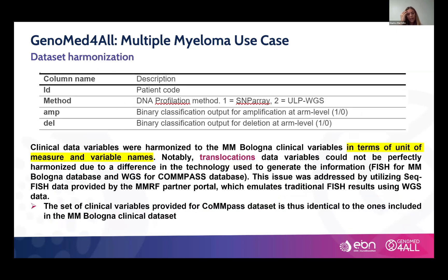Two steps were carried out by our group in Bologna for this dataset. The first was data harmonization — since the genomic data derived from different molecular techniques with very different outputs, this step was very important to provide other research groups a clean dataset for downstream analysis. For example, all information about amplification or deletion of specific chromosomes was annotated in the same standardized way.